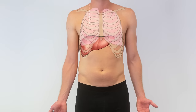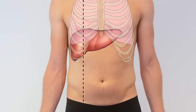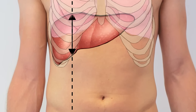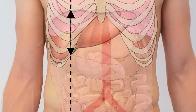In this patient, percussion, palpation, and scratch test reveal a physiological liver size. The cranial-caudal length of the right liver lobe in the midclavicular line is around 10 centimeters.